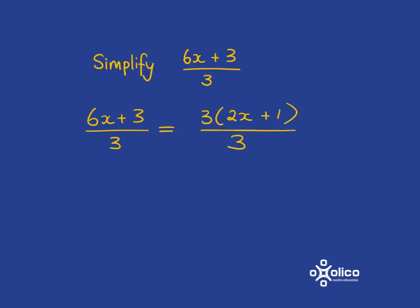Now we have multiplication, right? We have got 3 multiplied by this whole thing here, over 3. So now we can cancel, and we'll just be left with 2x + 1.